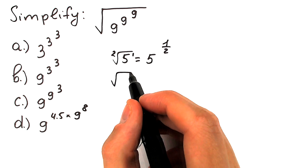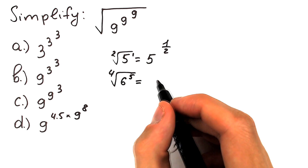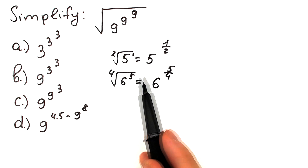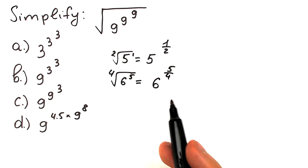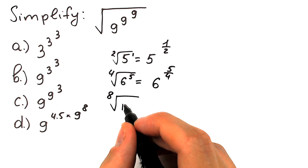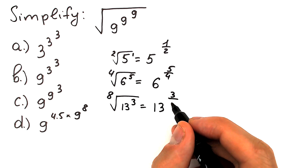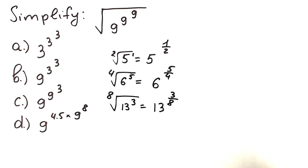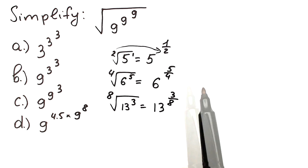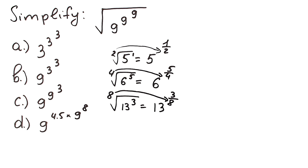Let's look at another example: the fourth root of 6 to the power 5. We can write this as 6 to the power 5 over 4. The power of the root goes to the denominator, and the power of the value goes to the numerator. One more example: the 8th root of 13 cubed equals 13 to the power 3 over 8. All the time we divide the power of the value inside by the power of our root.